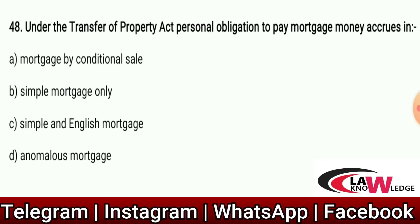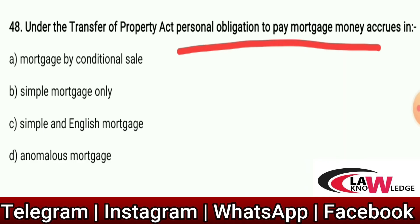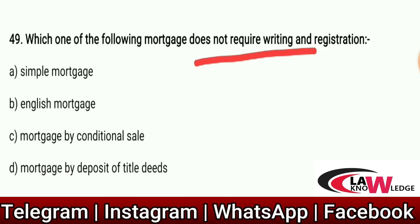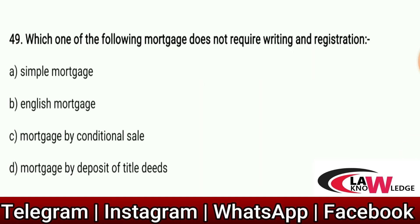Q48: Under the Transfer of Property Act, personal obligation to pay mortgage money accrues in — Option A: Mortgage by conditional sale. Option B: Simple mortgage only. Option C: Simple and English Mortgage. Option D: Anomalous mortgage. Correct answer is C — Simple and English Mortgage. Q49: Which type of mortgage does not require writing and registration? Correct answer is D — Mortgage by deposit of title deeds does not require writing and registration.